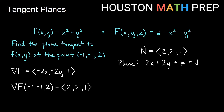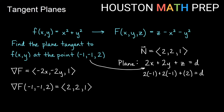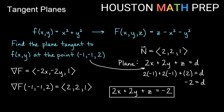With normal vector 2, 2, 1, I know my plane needs to be 2x plus 2y plus 1z equals some constant d. Since I also know the tangent point is negative 1, negative 1, negative 2, I plug it in to get a true statement and solve for d. That gives d equals negative 2. So our equation for the tangent plane is 2x plus 2y plus z equals negative 2.